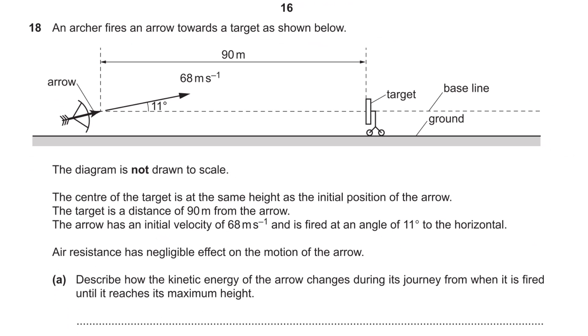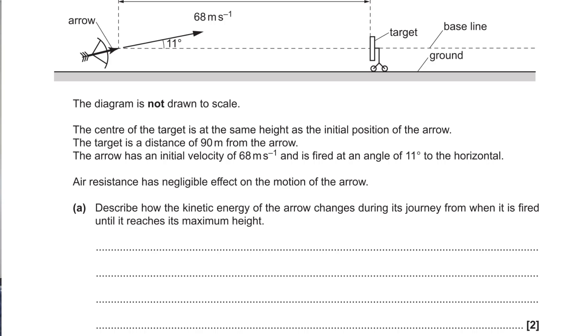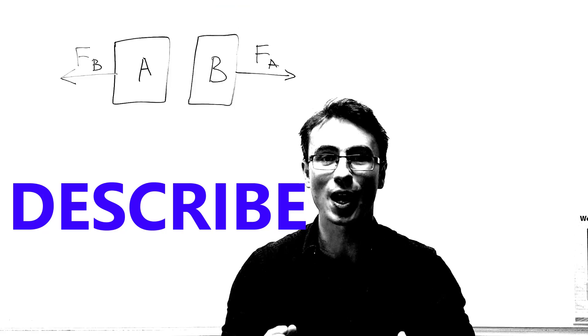We have an archer which fires an arrow towards a target as shown and the arrow just flies through and reaches a maximum height. Describe how the kinetic energy of the arrow changes during its journey from when it is fired until it reaches a maximum height. In this case the command word is describe.